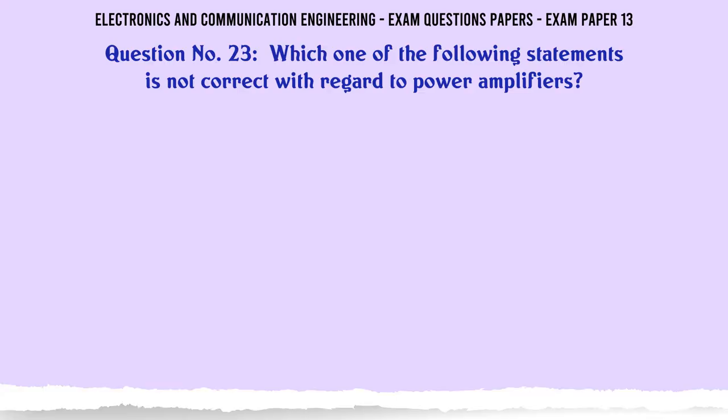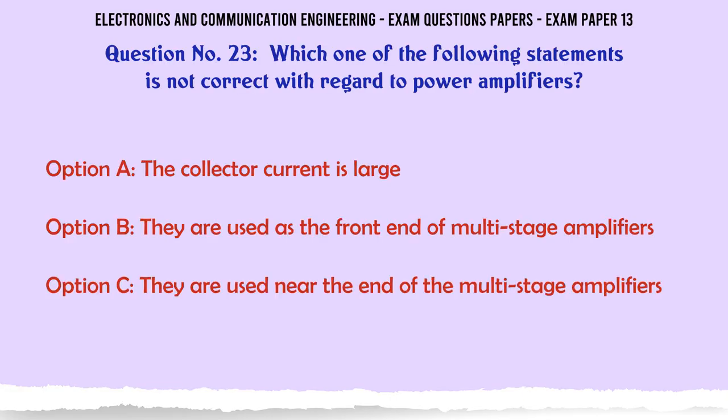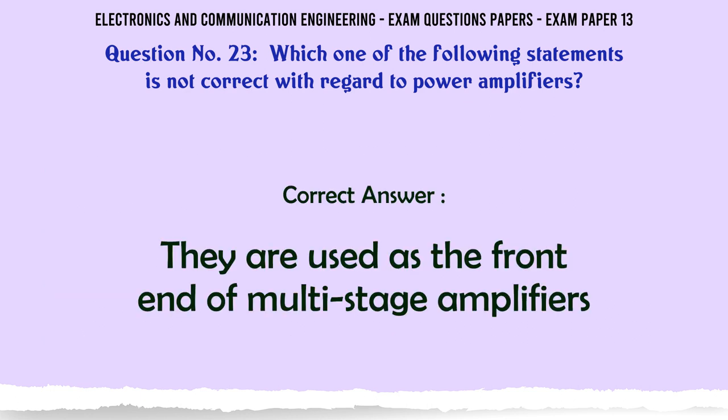Which one of the following statements is not correct with regard to power amplifiers? A: The collector current is large, B: They are used as the front end of multi-stage amplifiers, C: They are used near the end of the multi-stage amplifiers, D: They have a high power rating. The correct answer is they are used as the front end of multi-stage amplifiers.